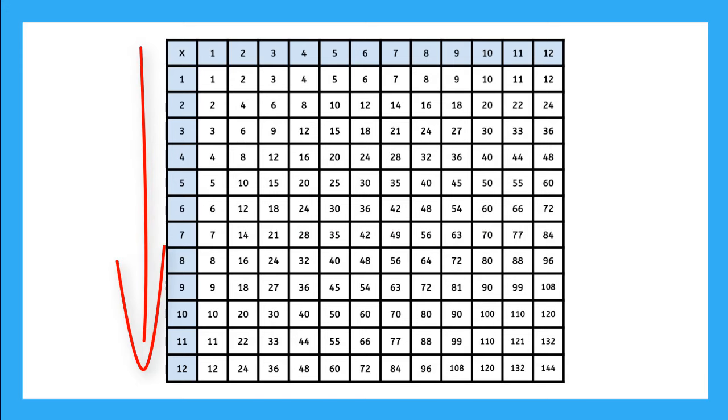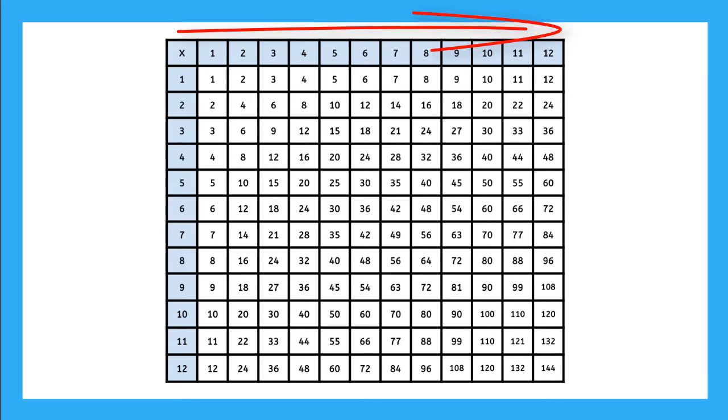The numbers that go down tell us how the row is growing, by 2's like 2, 4, 6, 8, 10, and so on. And the numbers across the top tell us how the columns are growing, like by 10's: 10, 20, 30, 40, and so on.